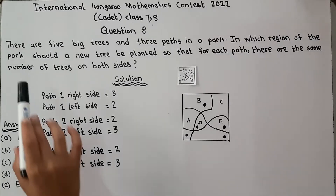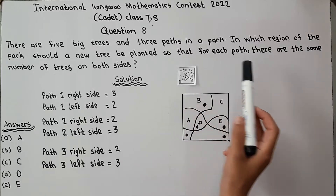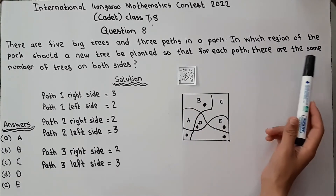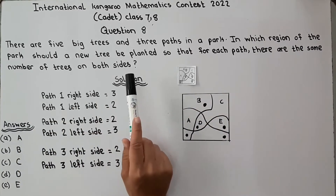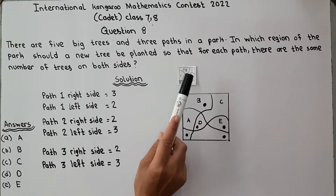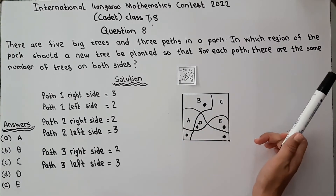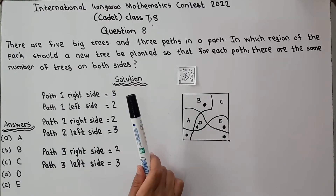There are 5 big trees and 3 paths. In which region of this path should a new tree be planted so that for each path there are the same number of trees on both sides?